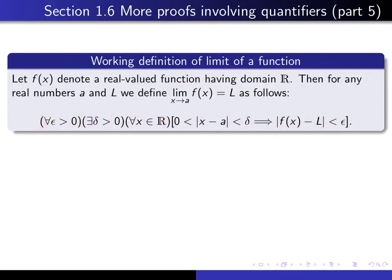In words it says: for every positive real number epsilon, there exists a positive real number delta, such that for every real number x, if the absolute value of x minus a lies between 0 and delta, then the absolute value of f of x minus l is smaller than epsilon.